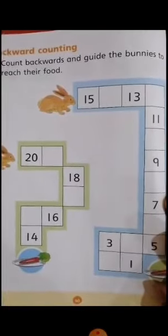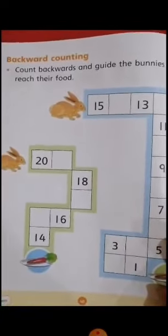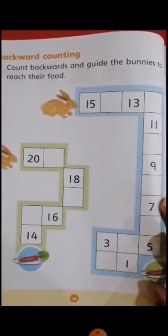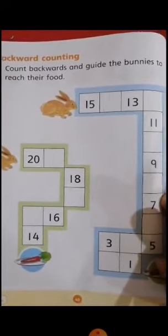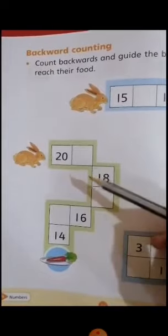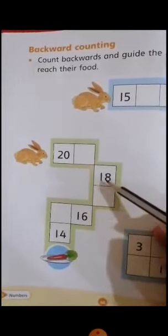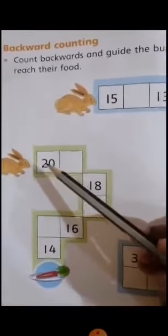Now class, look at page number 40 of your counting book. Backward counting. Count backward and guide the bunnies to reach their food. What do you need to do? You need to guide these bunnies to reach their food. Now you have to use backward counting. Now look at it here.